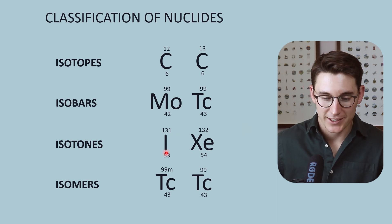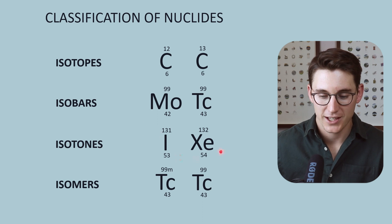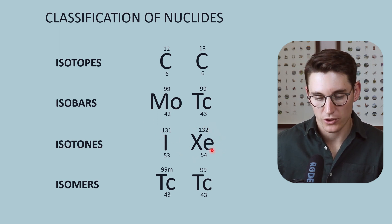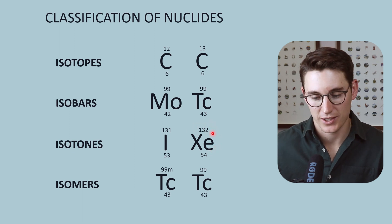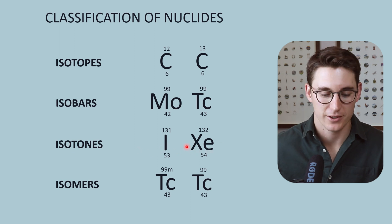Iodine-131, which is a radioactive isotope of iodine, is an isotone to xenon-132. These both have 78 neutrons within their atoms. So these are isotones of one another.